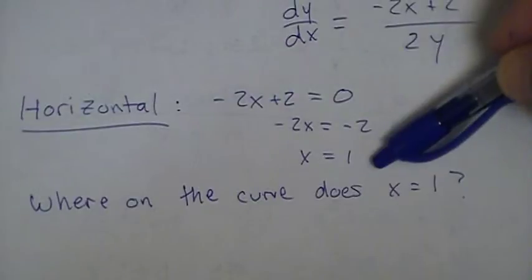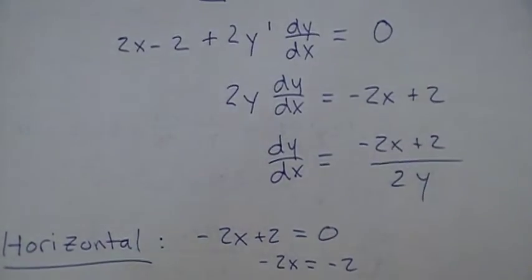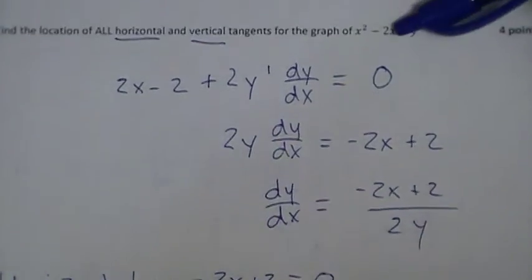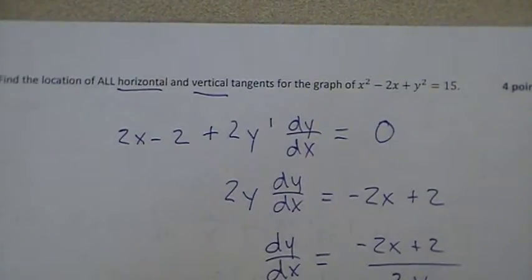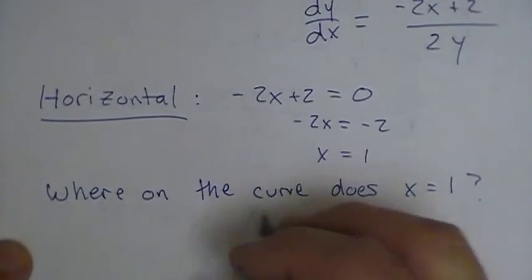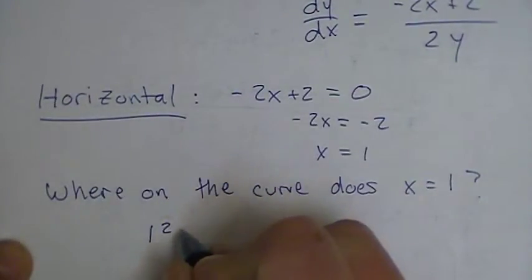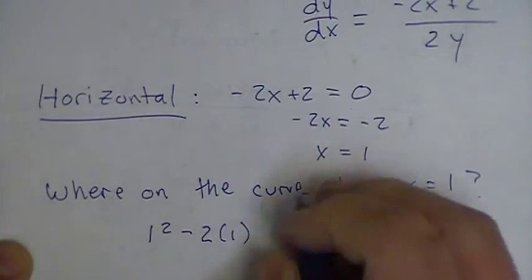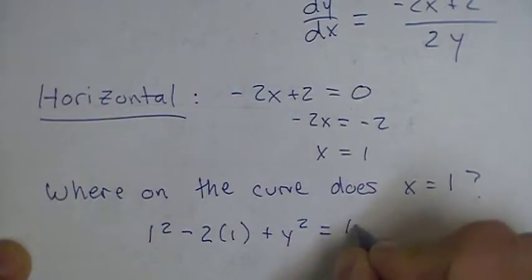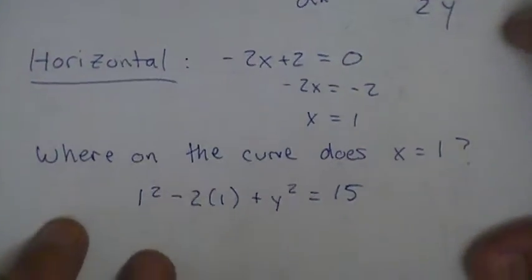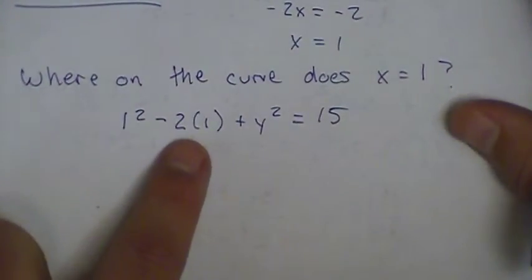So I need to take 1 and put it in place of the x's in the equation of the curve, and I need to try to figure out what value of y would satisfy that equation. So I'm going to put 1 in place of the first x, it gets squared, 1 in place of the second x, which is getting multiplied by 2, plus y² equals 15. If you're thinking about solving this, that's a 1, that's a minus 2.